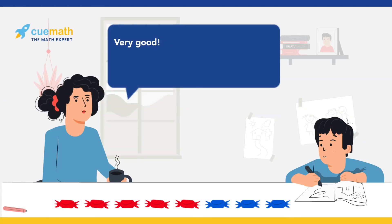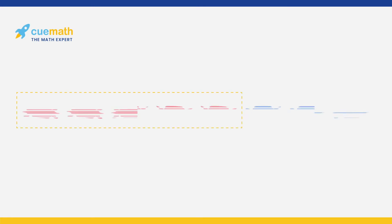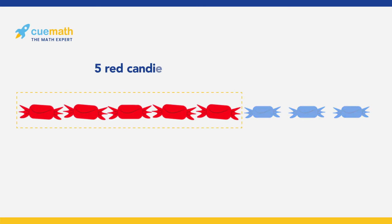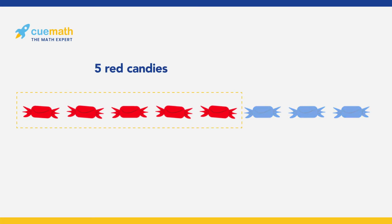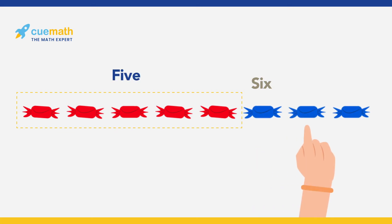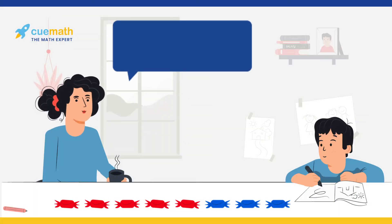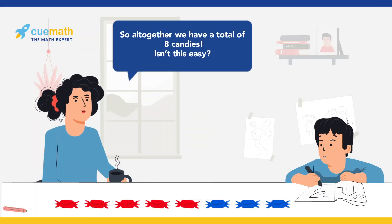Ben's mother then asks him if he would like to see an easier way to count the candies. She tells Ben that they already know that there are five red candies, so he can continue counting from six instead of starting from one. She then counts the blue candies: six, seven and eight. Hence, we have eight candies.